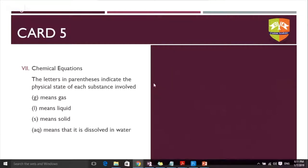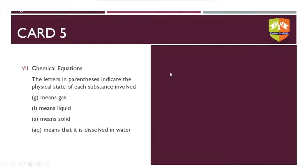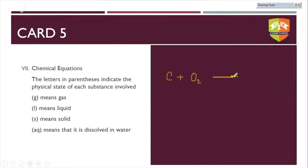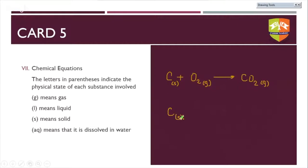For example, carbon (s) plus oxygen O₂ (g) gives CO₂ (g). Carbon is in a solid state, oxygen is in a gaseous state, and carbon dioxide is also in a gaseous state. Taking another example, carbon monoxide CO (g) — in this expression an upward arrow means either effervescence or a gas evolved. Upper arrows mean gas evolved and are extremely important to write.